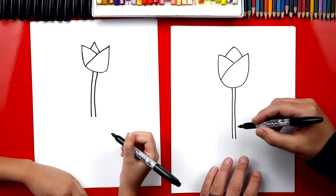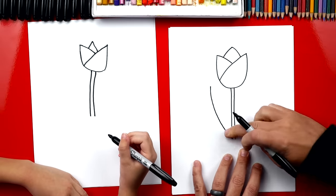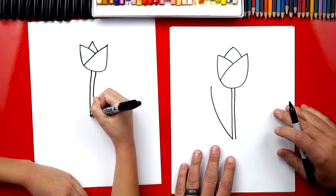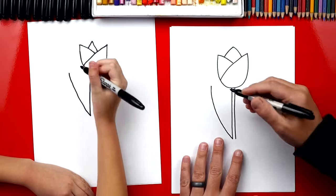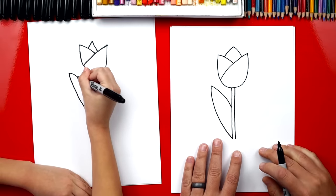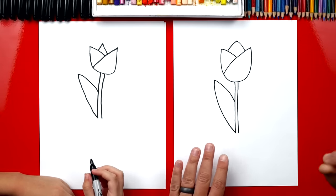Now we can draw a leaf right next to it. So we're gonna start here. We're gonna draw a curve. It comes up really tall. You can come all the way up to there. Then we're gonna draw a line coming back down. All right, we did it, Hadley. We finished drawing our tulips and yours turned out perfect.